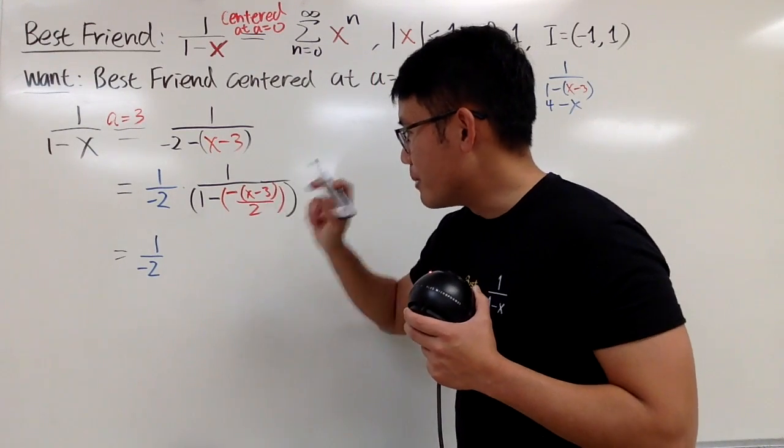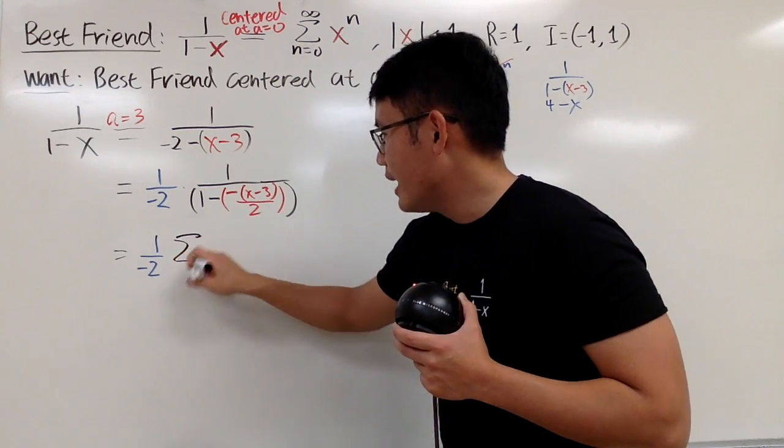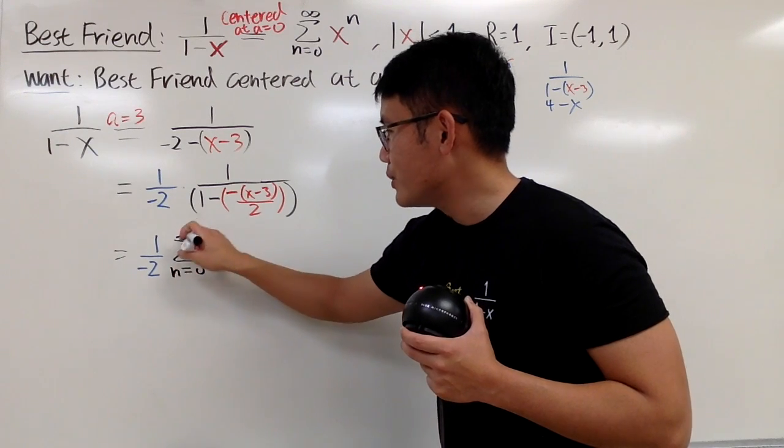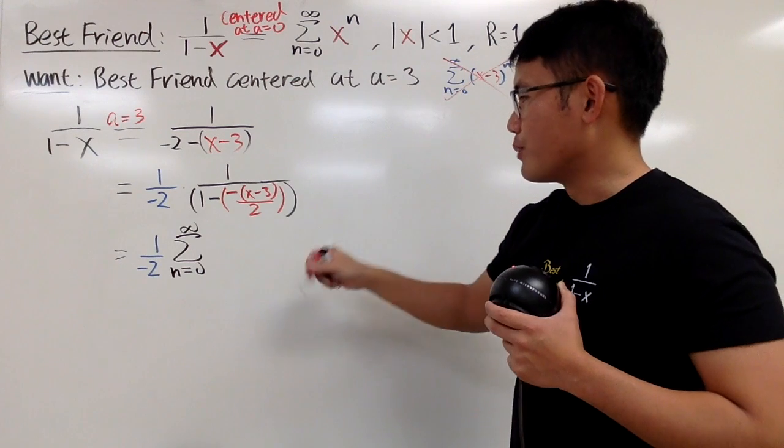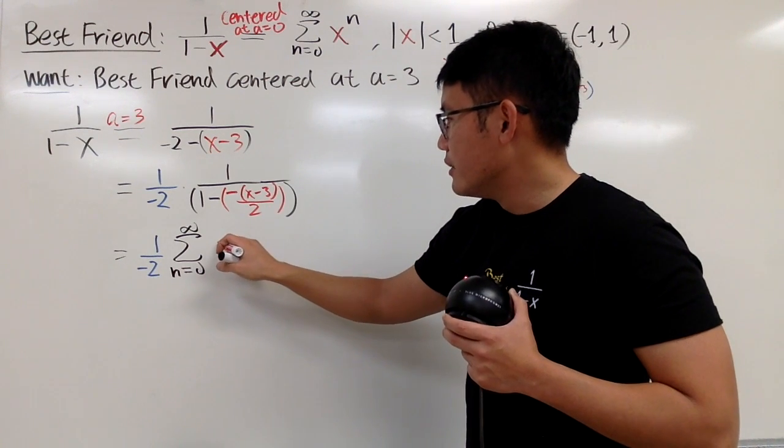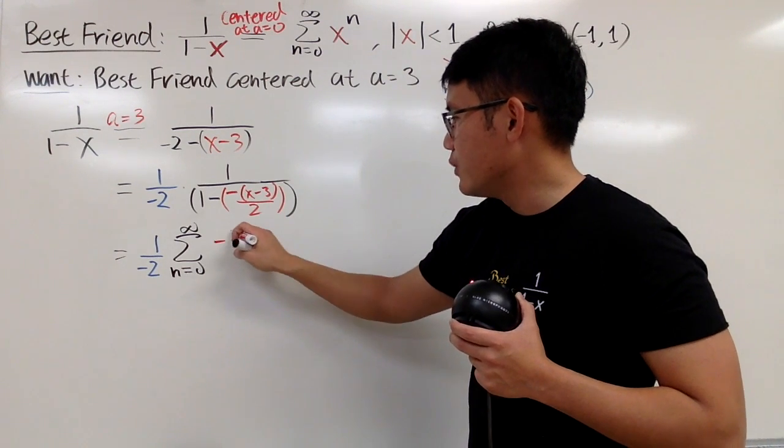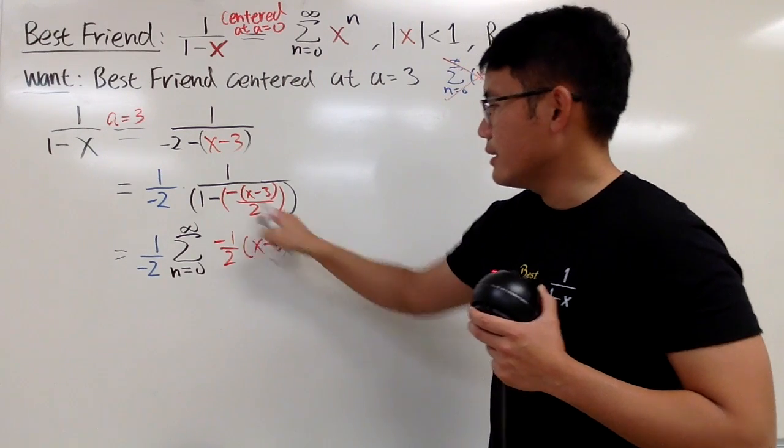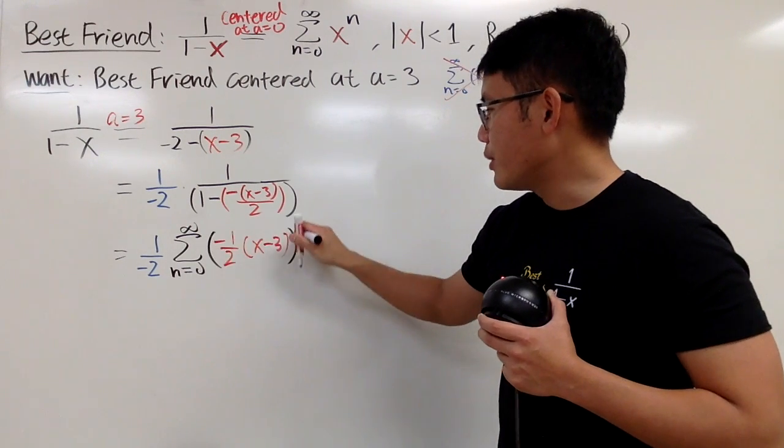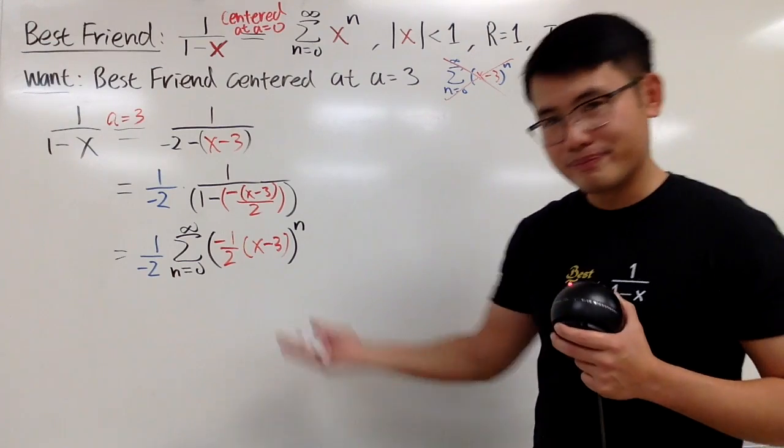So, this right here becomes the sum as n goes from 0 to infinity. And then I'll just put this right here for the x. And then you open up two parentheses, so we have all that. Negative, I will write it as negative 1 over 2, parentheses, x minus 3, right? And then, I'll put that in parentheses, raise that to n's power, just like that.